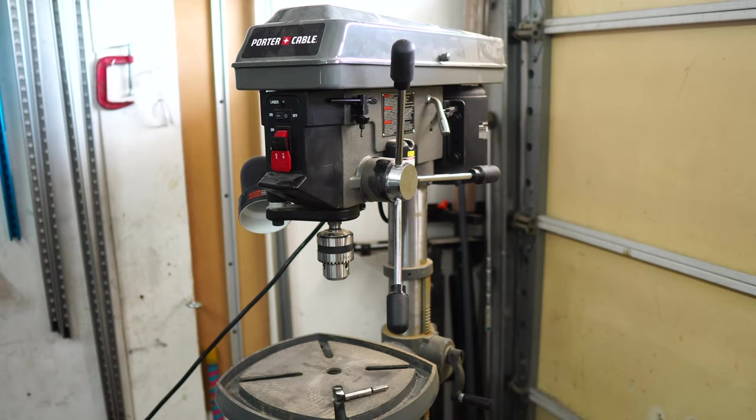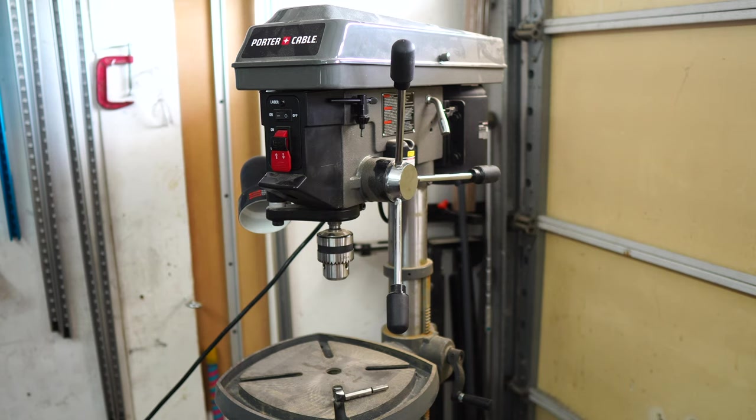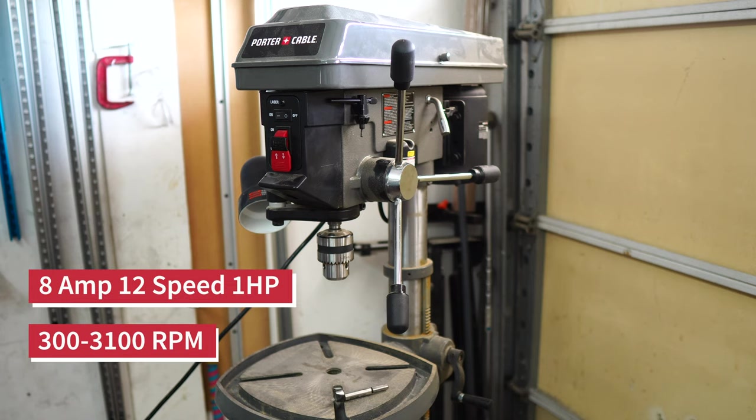So this, folks, is the Porter Cable 15-inch Floor Drill Press. It is PCB 660DP as the model number. It's an 8-amp, 12-speed, 1-horsepower press. It ranges from 300 to 3100 RPM.